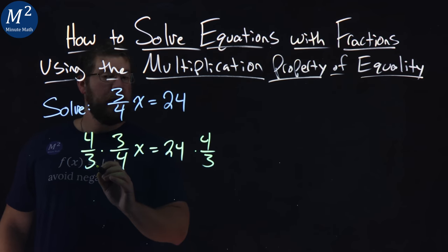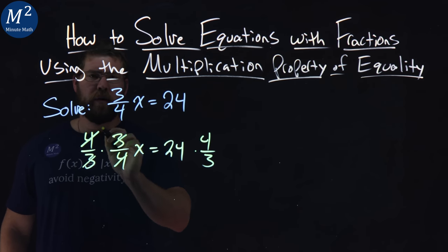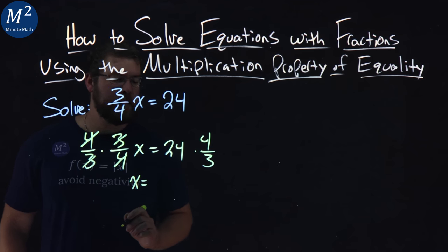the left-hand side cancels, 3, 3, 4, 4, leaving me with x by itself.